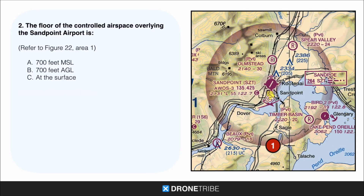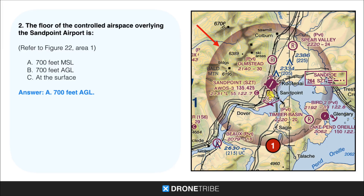For question 2, the floor of the controlled airspace overlying the Sandpoint Airport. Referring to Figure 22, Area 1, we find this airport. We see the magenta vignette around it, which indicates Class E airspace between 700 feet and 1,200 feet. So the floor of that is going to be 700 feet.